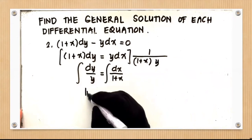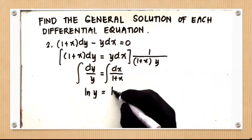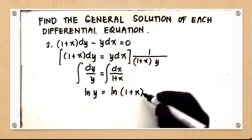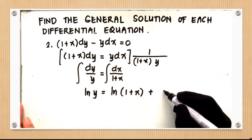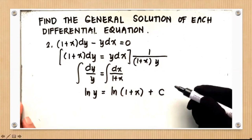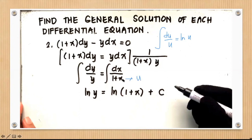Recall the formula: the integral of du over u equals ln|u|. For the left side, the integral of dy over y is ln|y|. For the right side, let u = 1 + x, so du = dx. The numerator dx satisfies the formula du over u, giving ln|1 + x|. So we have ln y equals ln(1 + x) plus c.